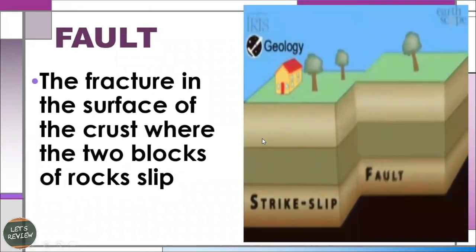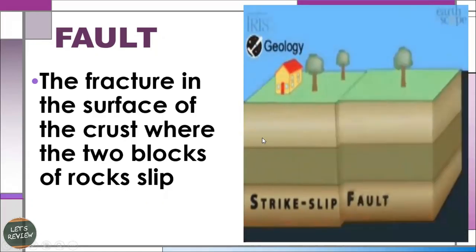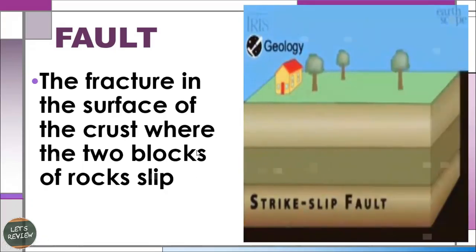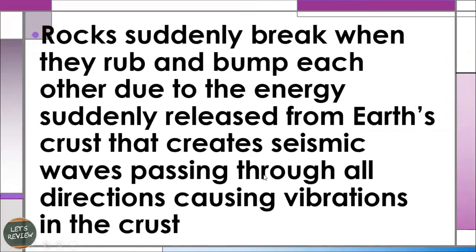A fault is a fracture on the surface of the crust where two blocks of rock slip, as seen in the animation. The abrupt shifts of the rocks in the crust originate from below the earth's surface. Rocks suddenly break when they rub and bump each other due to energy suddenly released from the earth's crust, creating seismic waves passing through all directions and causing vibration in the crust.